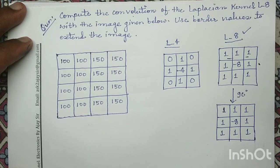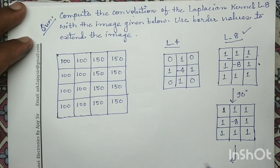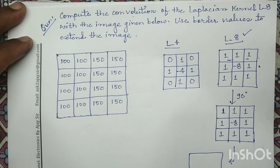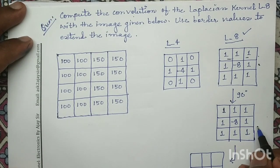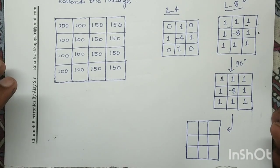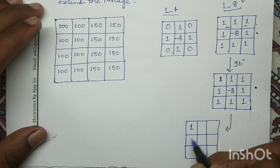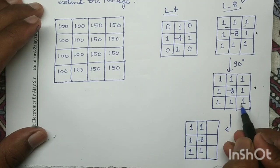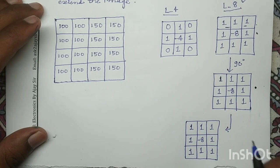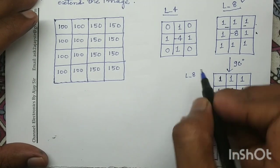To complete the 180 degree rotation, we take this intermediate result and rotate it by another 90 degrees. Again we repeat the same process: the first row becomes the first column, the second row becomes the second column, and the third row becomes the third column. So here also we are performing a 90 degree rotation, and this intermediate result is the L8 mask rotated by 180 degrees.